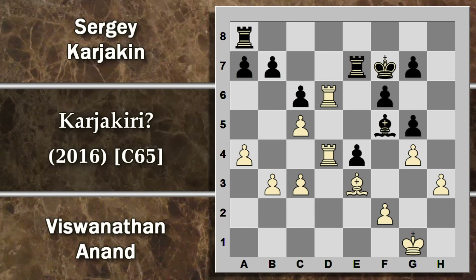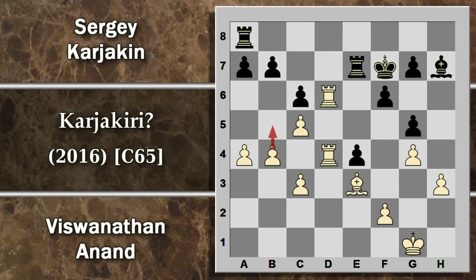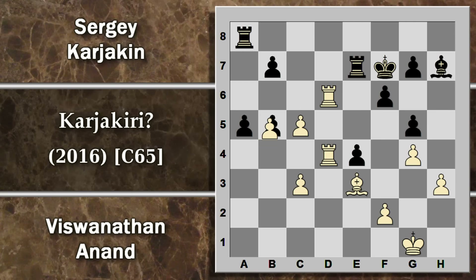Viene giocata G4 e l'alfiere è costretto a ritirarsi in H7 per essere riciclato sull'altra diagonale, manovra abbastanza positiva. Si prosegue però con B4 e l'avanzata dei pedoni bianchi comincia a farsi preoccupante. Forse poteva valere la pena di giocare A5, per la possibilità di aprire la colonna alla torre che si attiverebbe immediatamente. Anand avrebbe dovuto giocare B5, dopo C per B e A per B, con il nero che tiene un po' di controg ioco sotto forma di un pedone passato. Il nero avrebbe avuto buone possibilità di pareggiare.